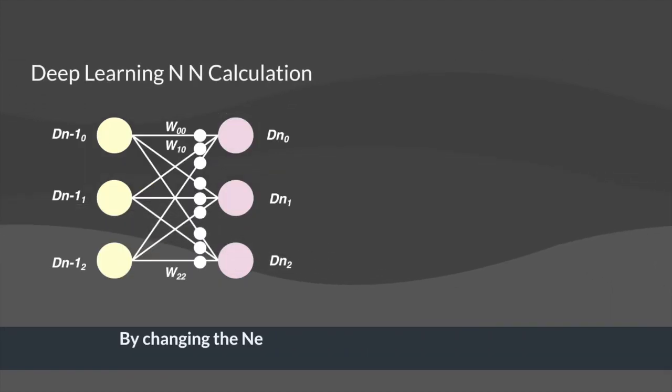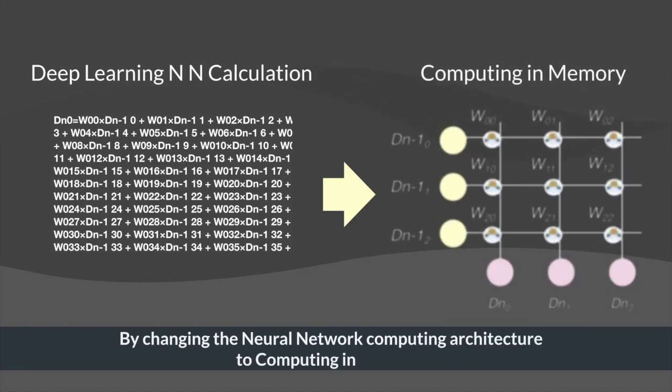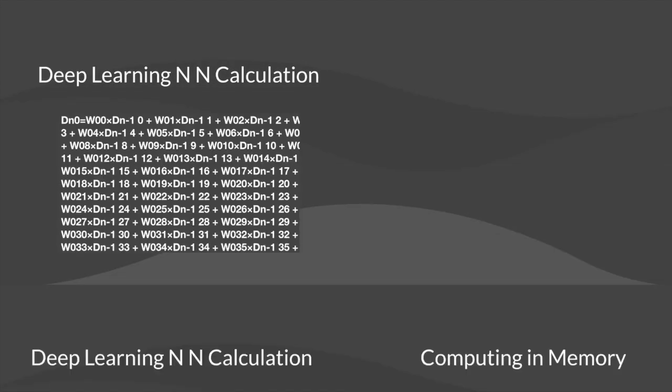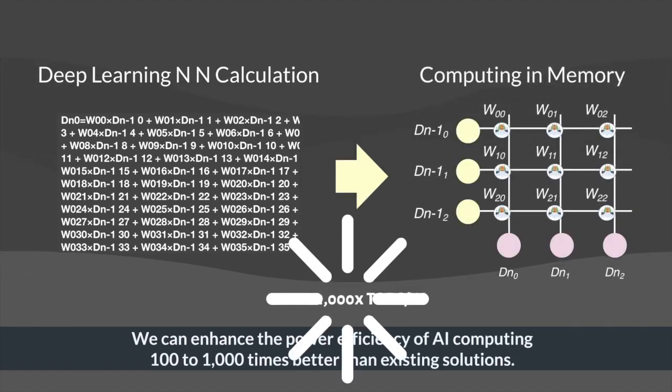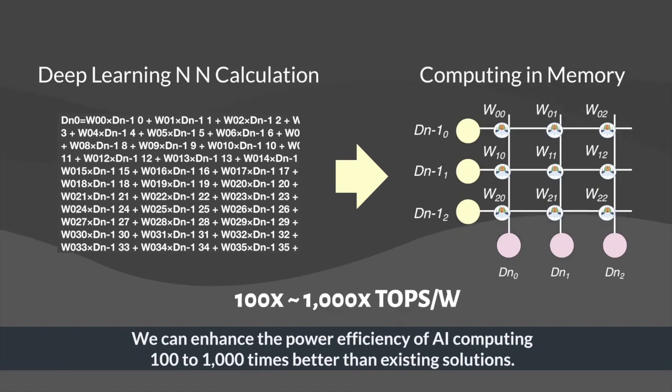By changing the neural network computing architecture to computing in memory, we can enhance the power efficiency of AI computing a hundred to a thousand times better than existing solutions.